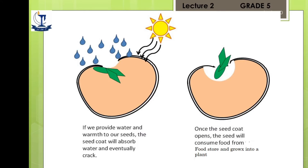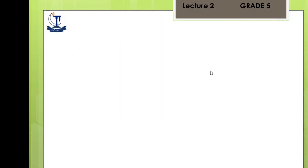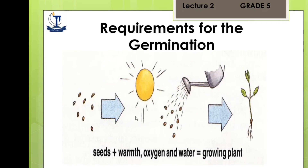These are the three factors. When the seed absorbs water — here is the seed and this is the seed coat — the seed absorbs warmth from the sun and water, which causes the seed coat to crack. The little baby plant, also known as the embryo, shown here in green, starts to grow. Once the seed coat opens, the seed will consume food from the food store and transfer it into the plant.